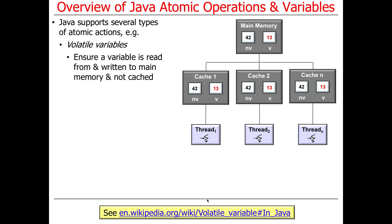It's a great interview question to ask someone who claims to know C++, C, and Java — you can almost certainly trip them up by asking them to explain the difference between volatile in the different languages. In Java, volatile means that a variable is read from and written to main memory, not what's in the processor cache. Here's how things are organized in a modern memory hierarchy: you've got main memory, and each core has its own cache.